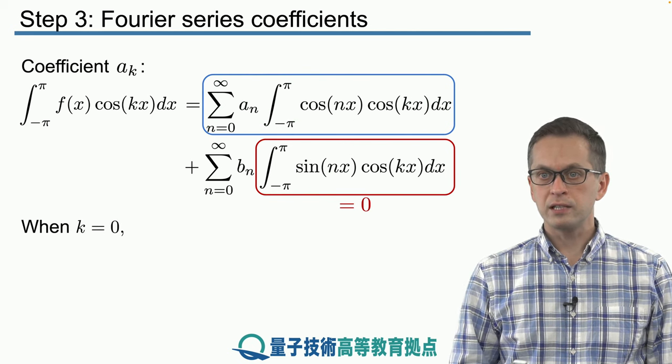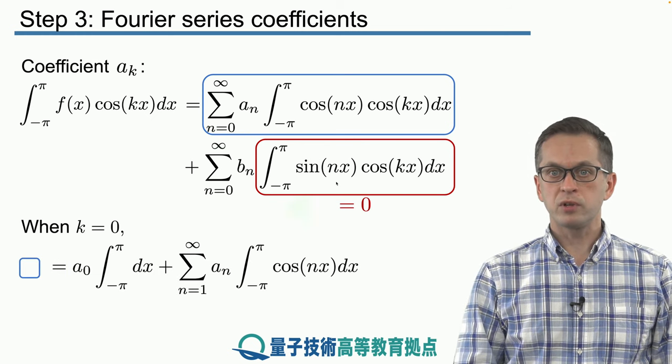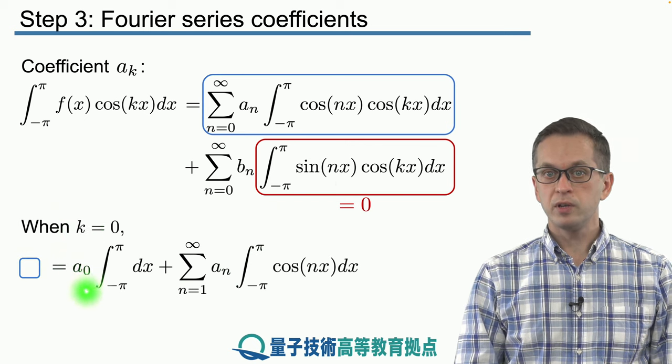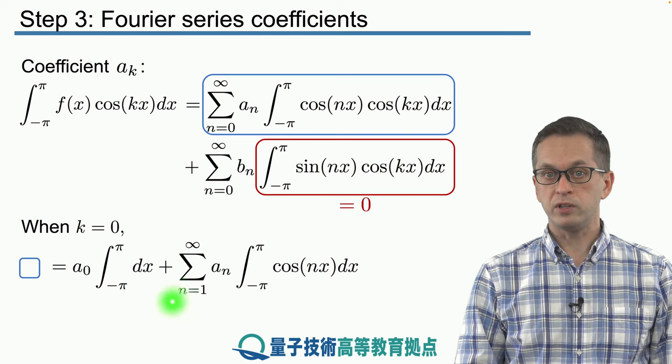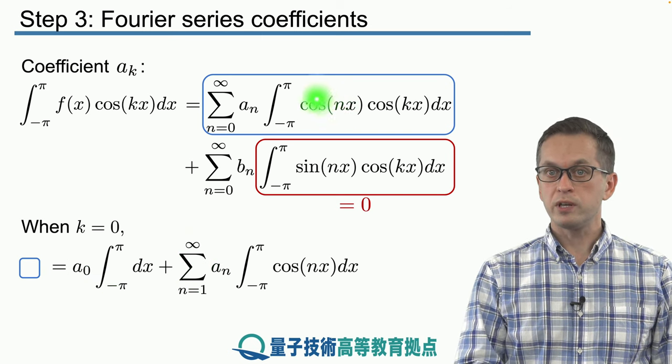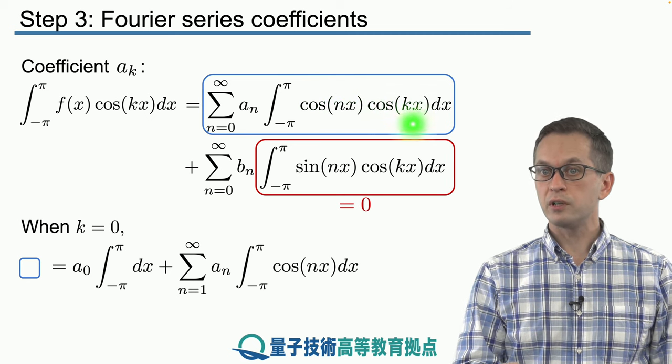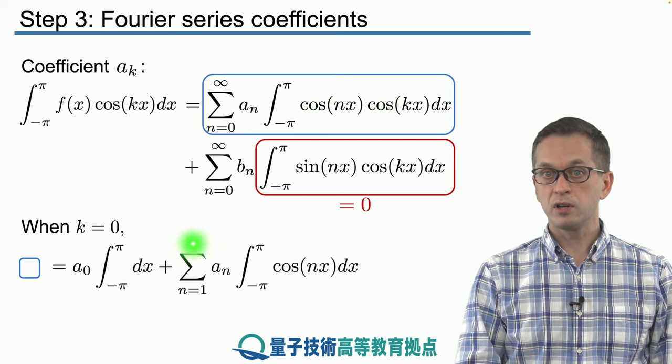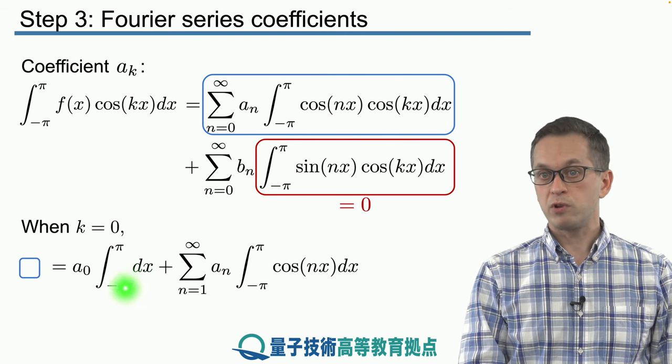So let's first consider the case when k is equal to 0. I'm not going to repeat the full integral, I'm just going to label it as a blue box. And what we can do is split the sum into first the term where n is equal to 0 and the remaining terms, n equals 1 going all the way up to infinity. So when n is equal to 0, we can see that cosine of 0 is just 1, and also we said we're considering the case of k being 0. So we've got 1 times 1 inside the integral. So we've got a_0 times the integral from minus pi to pi of dx, which we know how to do. It's very easy.